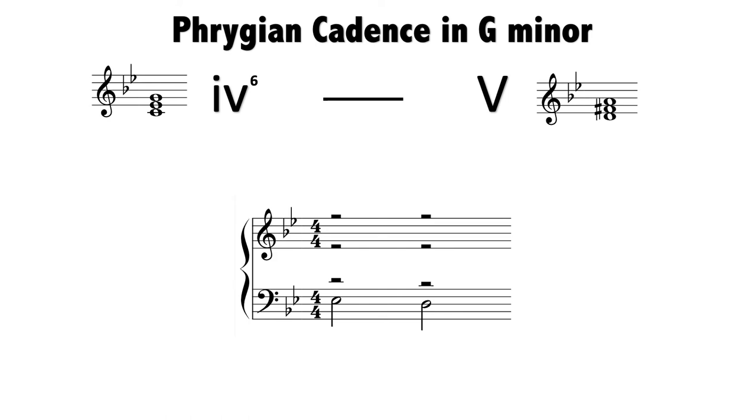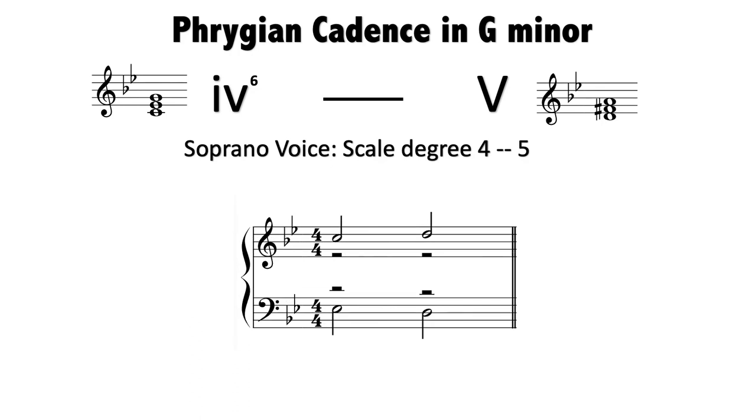A second rule for Phrygian cadence is that the scale degree for the soprano voice must be 4 going to 5. What is scale degree 4 in G minor? We count to the fourth note - that's C. What is scale degree 5 in G minor? D. So the soprano voice must be C going to D.